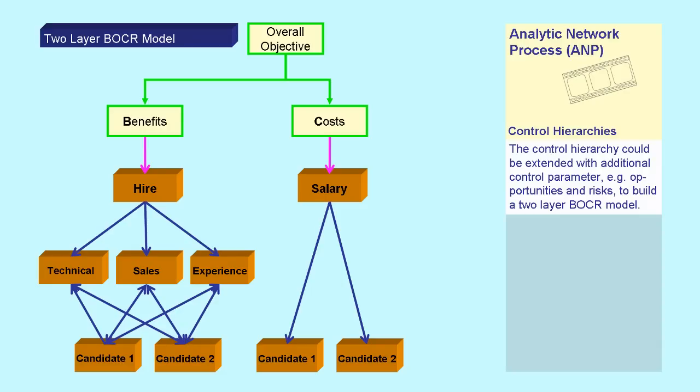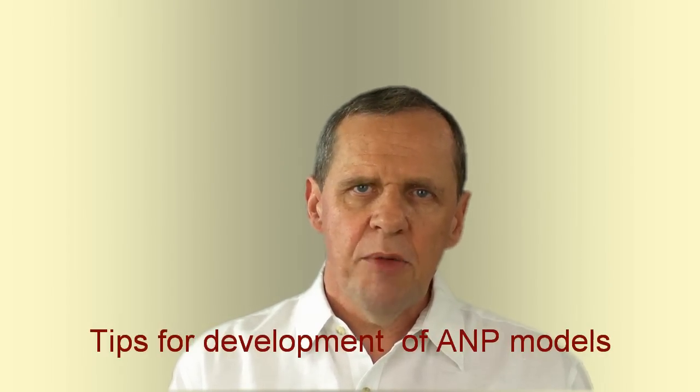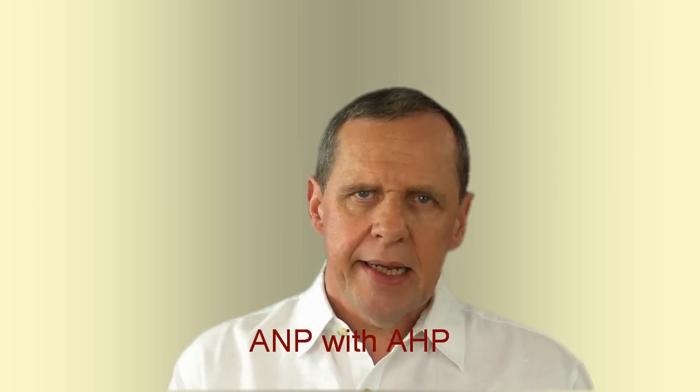The control hierarchy could even be extended with additional control criteria, for example opportunities and risk, to build a two-layer BOCR model. You can find a free ANP software at superdecisions.com. In my next presentation, I will give some practical tips for the development of models under ANP, and I will compare the practical application of the Analytic Network Process with the Analytic Hierarchy Process.